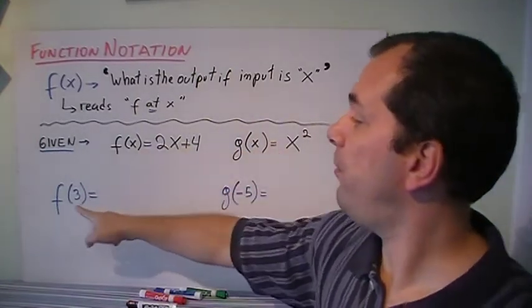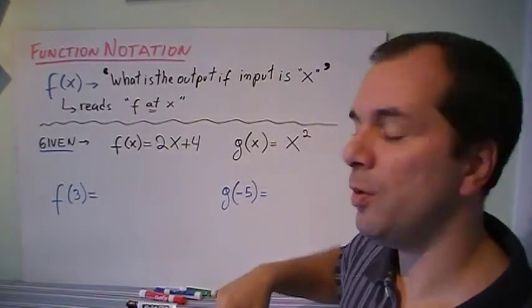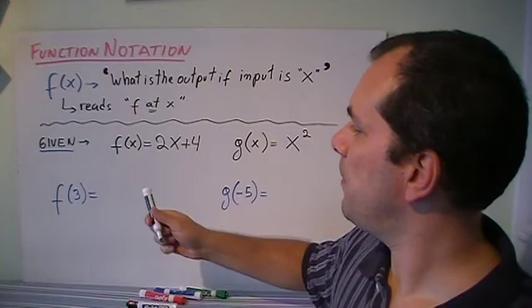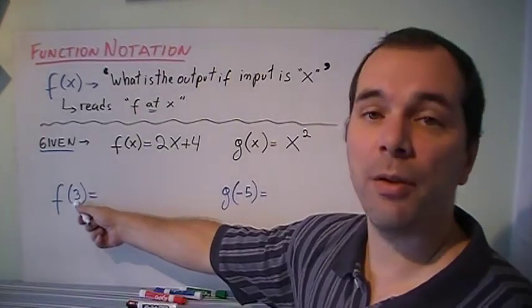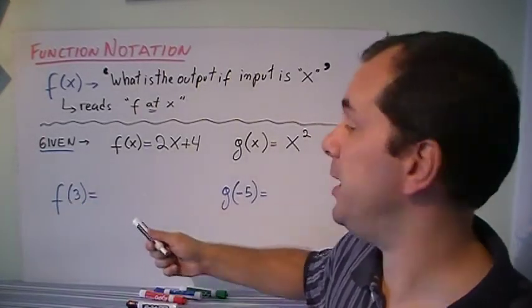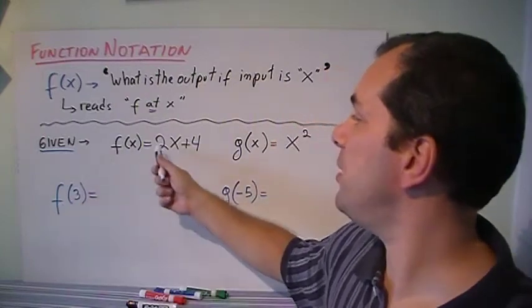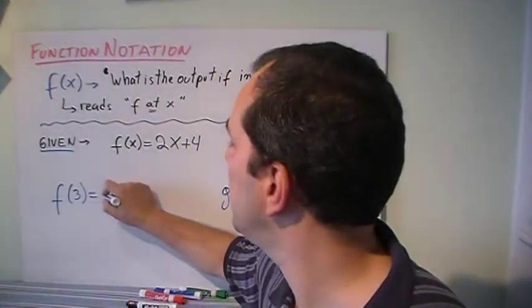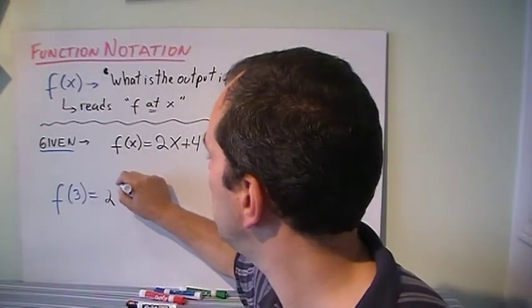So they told us find f(3). What does that mean? Well that just means that I need to put in my input 3 and see what the output is. Since function f is 2x plus 4, all I'm going to do is say 2 times x...